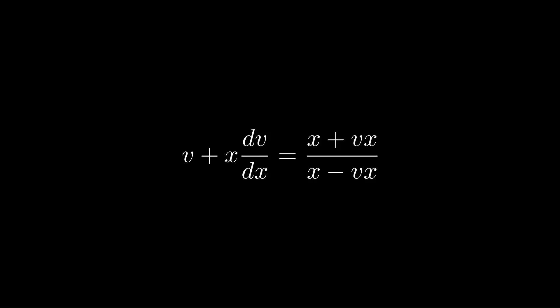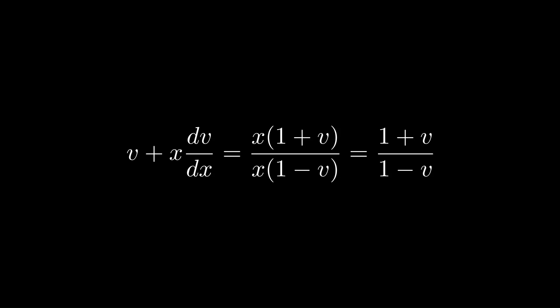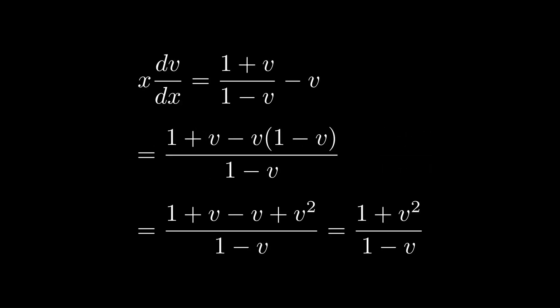We convert dv/dx into terms of x and v. Factoring out x, we get (1 + v) / (1 − v). Then we combine fractions to get (1 + v²) / (1 − v), which simplifies things considerably for integration.